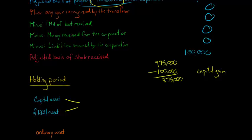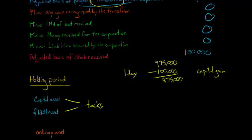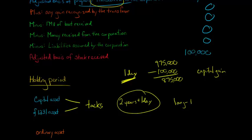For a capital asset or Section 1231 asset, the holding period of the asset you are transferring tacks. What that means is: if you sell the stock one day after the Section 351 transaction, you add the two years you already owned the Ferris wheel to that one day. So your holding period would be two years and one day. Because you have owned it for one year or longer, it would be a long-term capital gain.